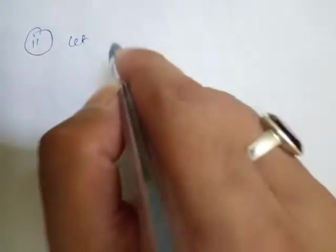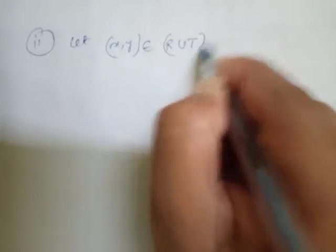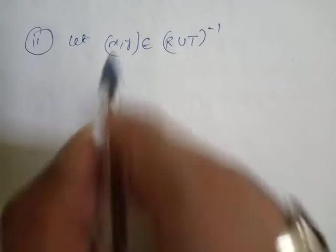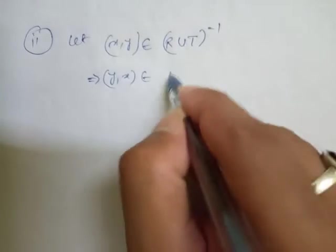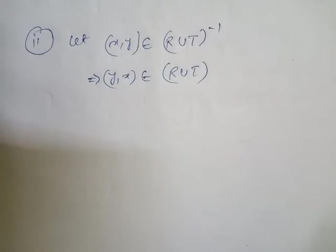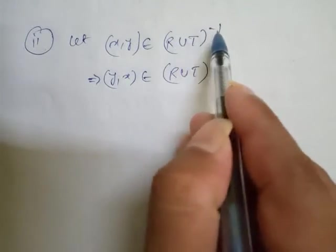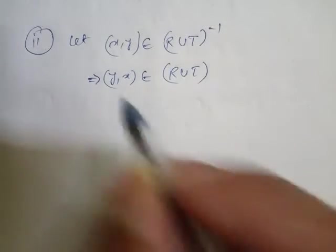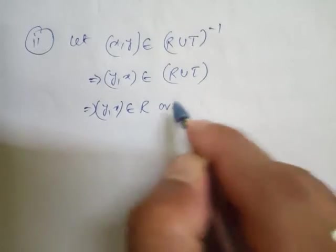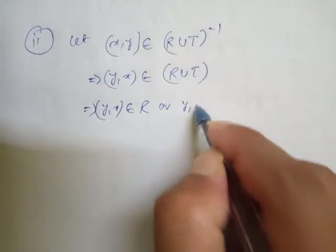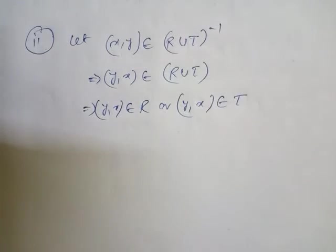For question number 13 Roman II: let x comma y belong to R union T whole inverse. If x comma y belongs to R union T whole inverse, then y comma x belongs to R union T.